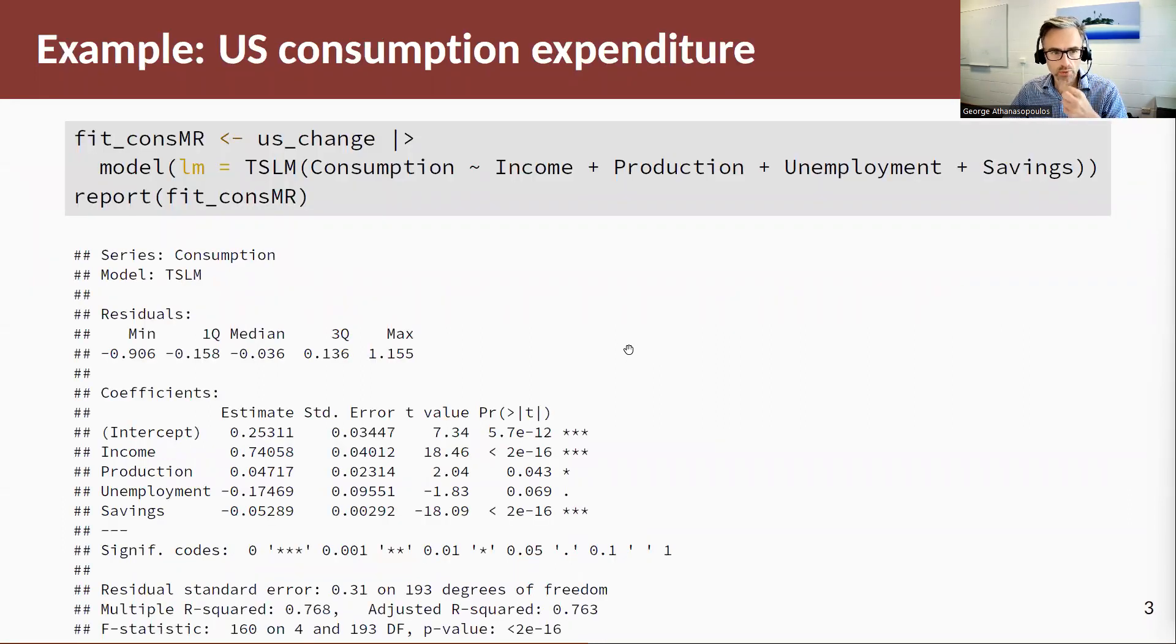Let's look at what the output looks like. First, the specification of the model: we have yt consumption, our predictor variables—four of them: income, production, unemployment, and savings. Notice that I don't have to specify an intercept; an intercept is automatically estimated unless I don't want it to be.